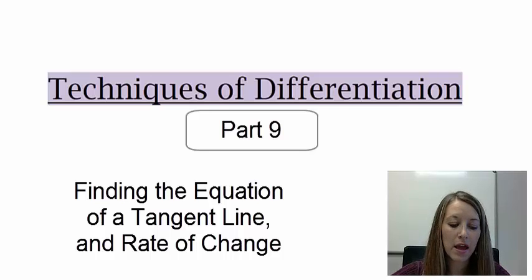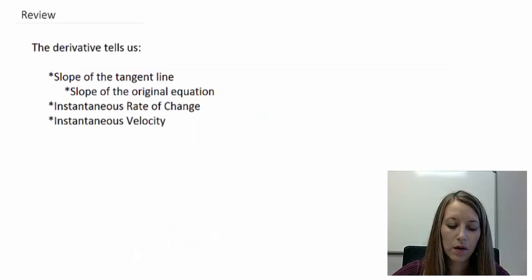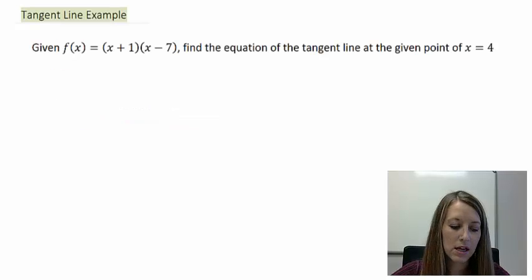We are working on applying our techniques of differentiation and seeing how the derivative helps us in lots of different situations. We know that the derivative can tell us any one of these things: slope of the tangent line, slope of the original equation, instantaneous rate of change, and instantaneous velocity.